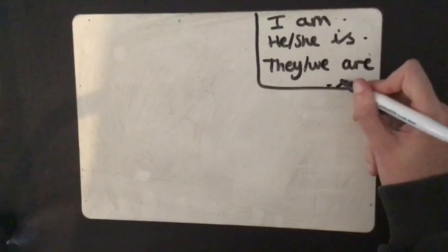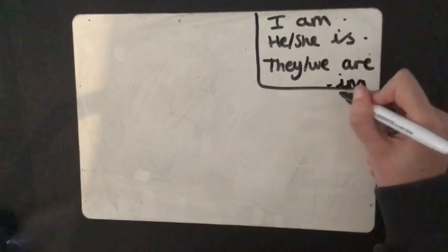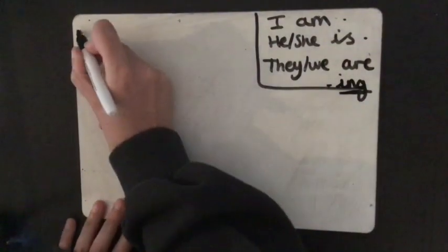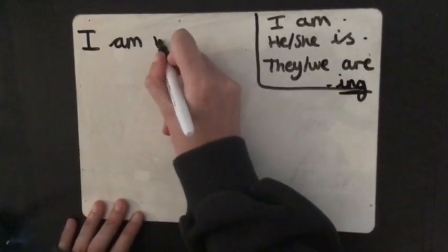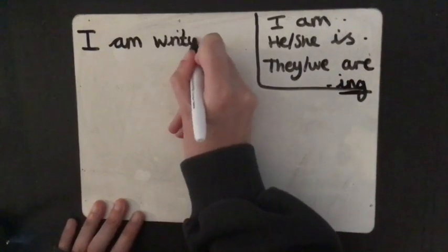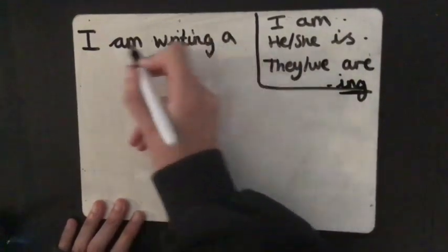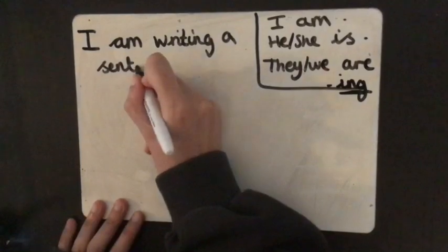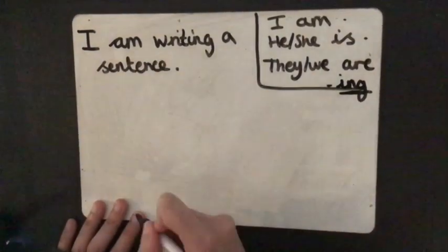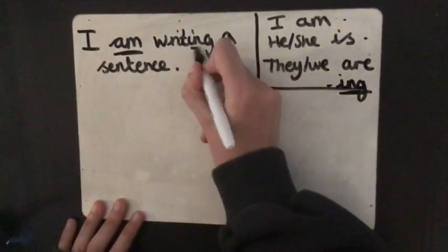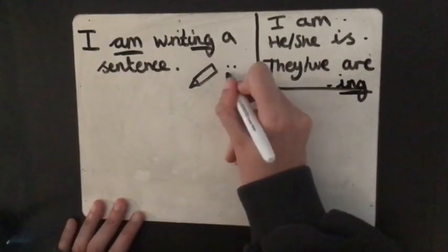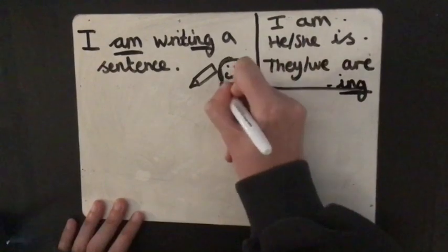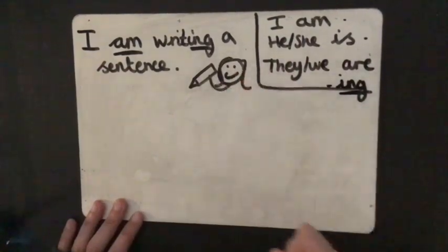But I must remember as well that my verbs need to end in an ing. So I am writing a sentence. Full stop. There's my to be and there's my action with an ing. And there's a picture of me. Here I am writing my sentence.